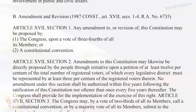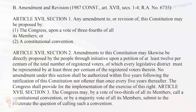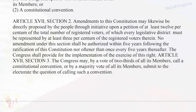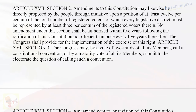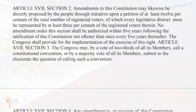Amendment and Revision — 1987 Constitution, Art. 17, Sec. 1–4; R.A. No. 6735. Article 17, Section 1: Any amendment to or revision of this Constitution may be proposed by: (1) the Congress upon a vote of three-fourths of all its members, or (2) a Constitutional Convention. Article 17, Section 2: Amendments may likewise be directly proposed by the people through initiative upon a petition of at least 12 percentum of the total number of registered voters, of which every legislative district must be represented by at least 3 percentum of the registered voters therein. No amendment under this section shall be authorized within 5 years following the ratification of this Constitution, nor oftener than once every 5 years thereafter. The Congress shall provide for the implementation of the exercise of this right.